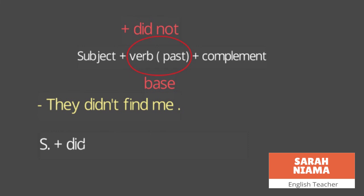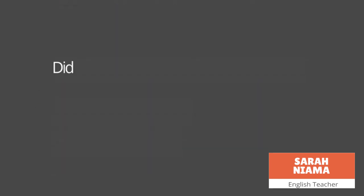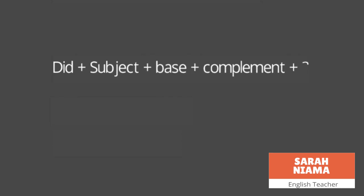The negative rule is: subject plus didn't plus base verb plus complement. To make a question, we add the auxiliary verb 'did' at the beginning of the sentence, followed by the subject, then the base verb, and finally the complement with a question mark. For example: 'Did you forget her?'